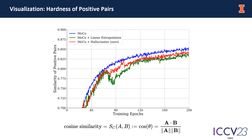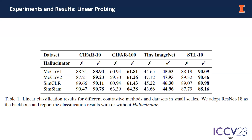Our results demonstrate that the extrapolation process can reduce the mutual information. However, it is not that stable with such a naive linear operation. Incorporating hallucinators can further smoothen the learning process and achieve a better result. In the experiment, we demonstrate the linear probing result on relatively small-scale datasets like CIFAR-10, CIFAR-100, TinyImageNet, and STL-10. Generally speaking, hallucinators improve the models by 0.3% to 3%.